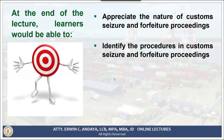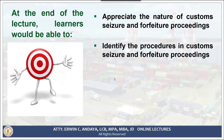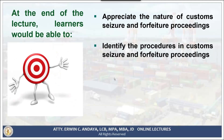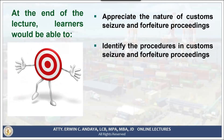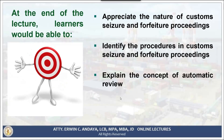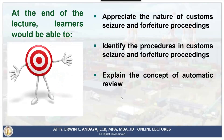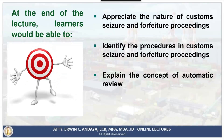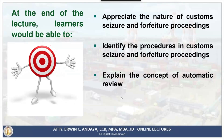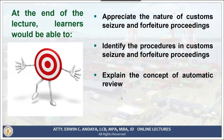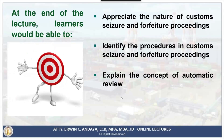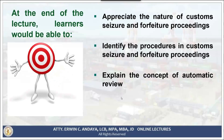What documents need to be submitted by the importer, customs broker, or owner of imported goods? What remedies are available to aggrieved parties? Third, we'll try to explain the concept of automatic review — a provision in the CMTA where whenever the decision of the district collector is adverse to the government, meaning favorable to the importer, then automatic review comes in.